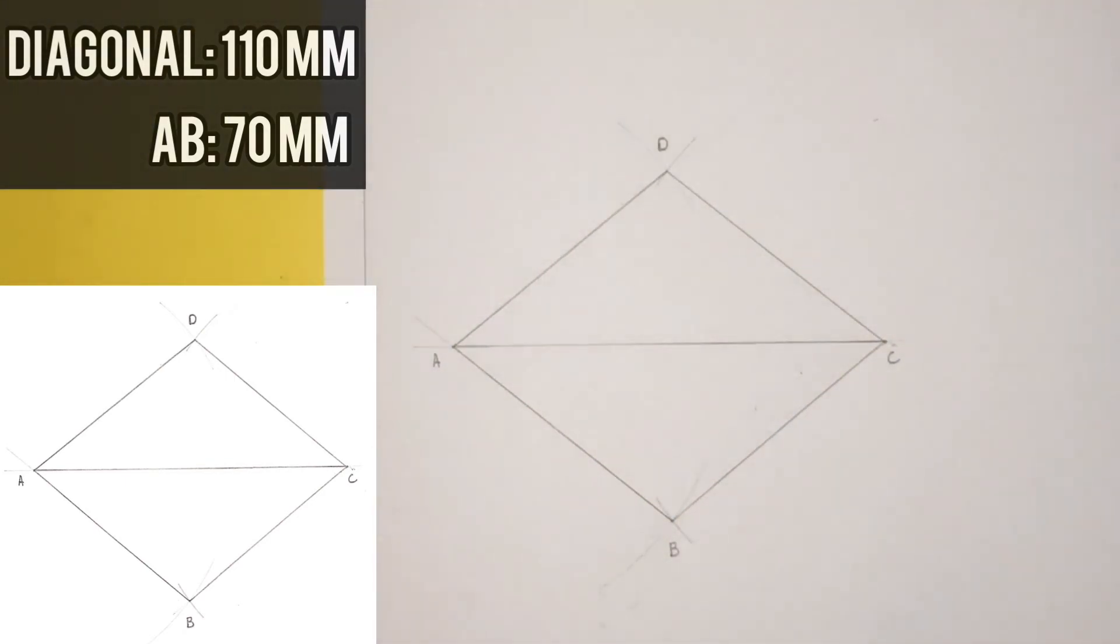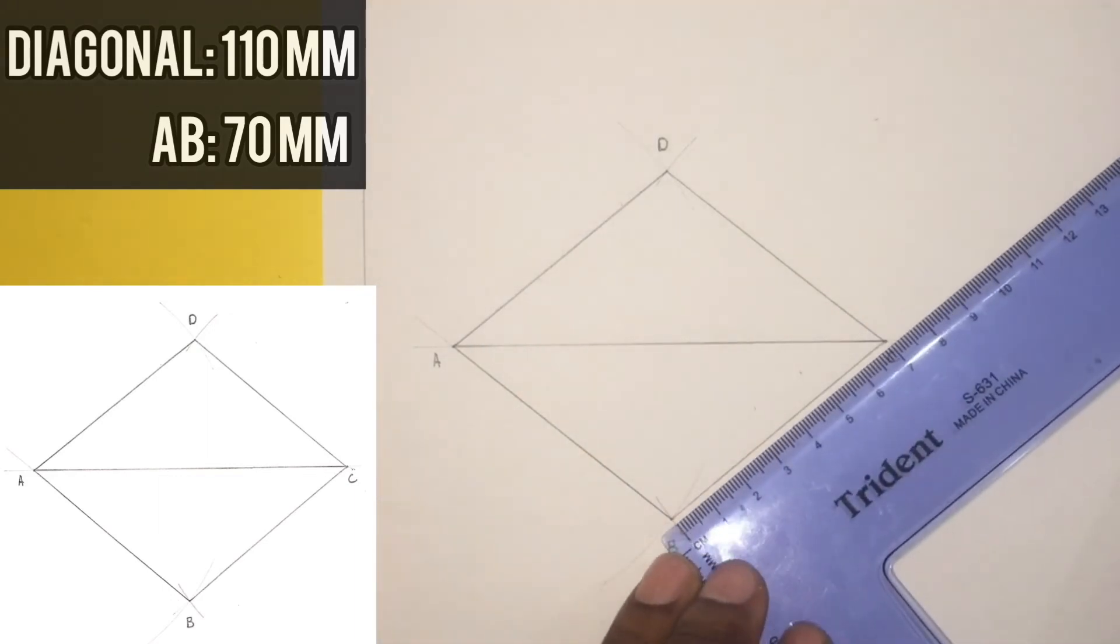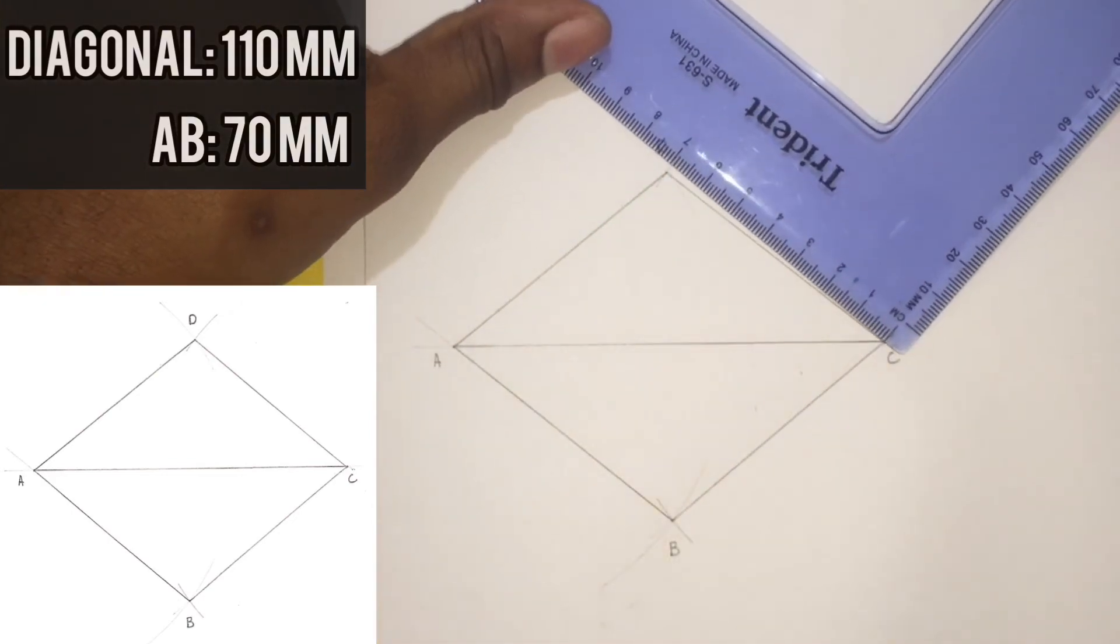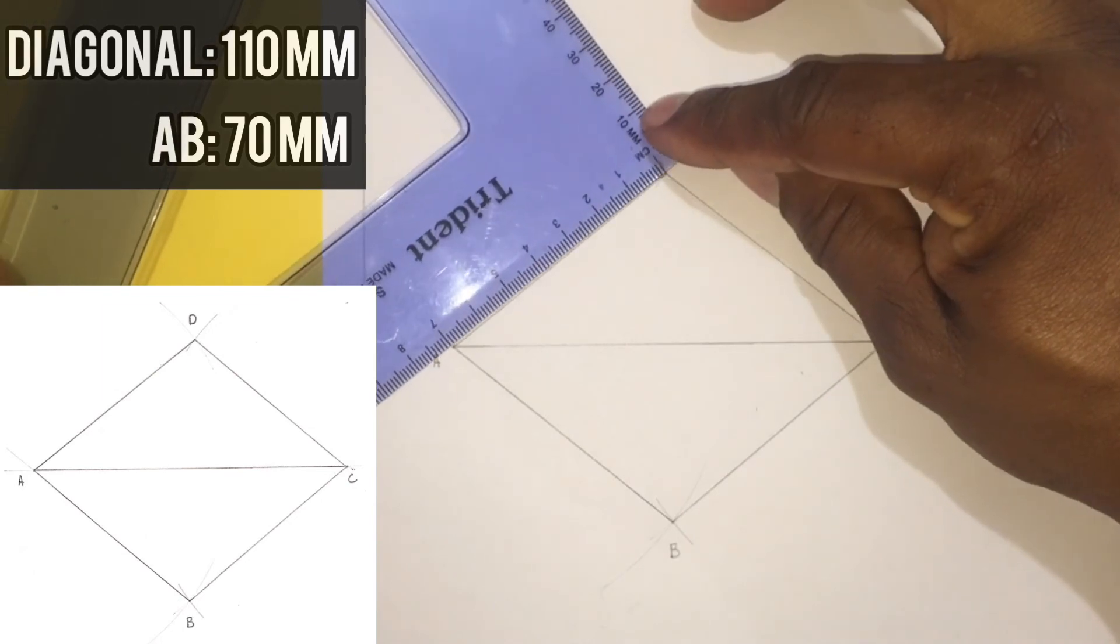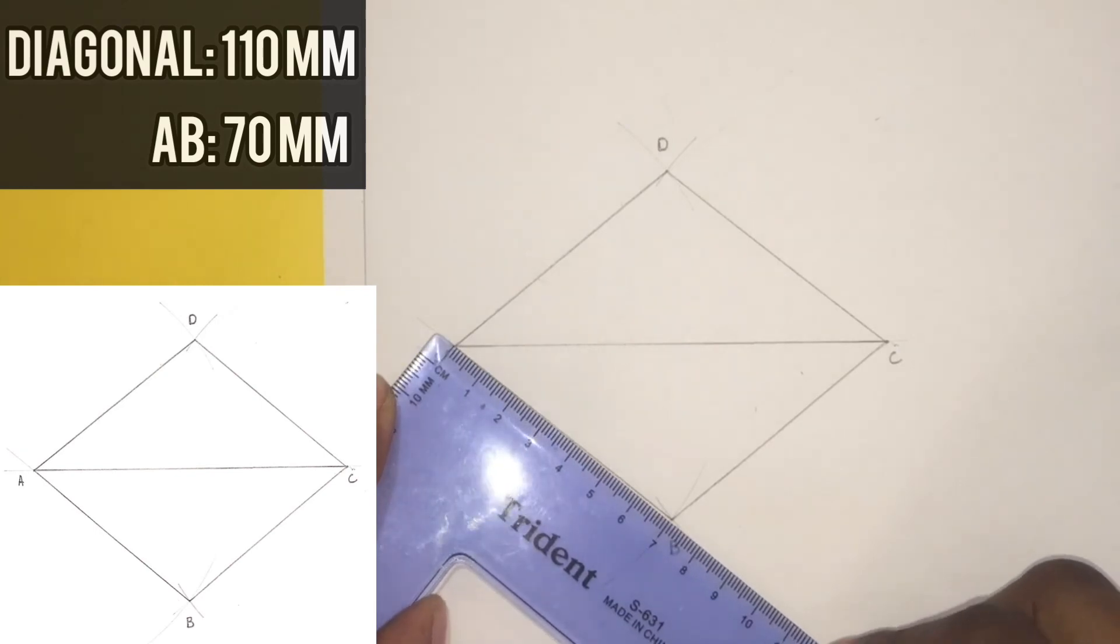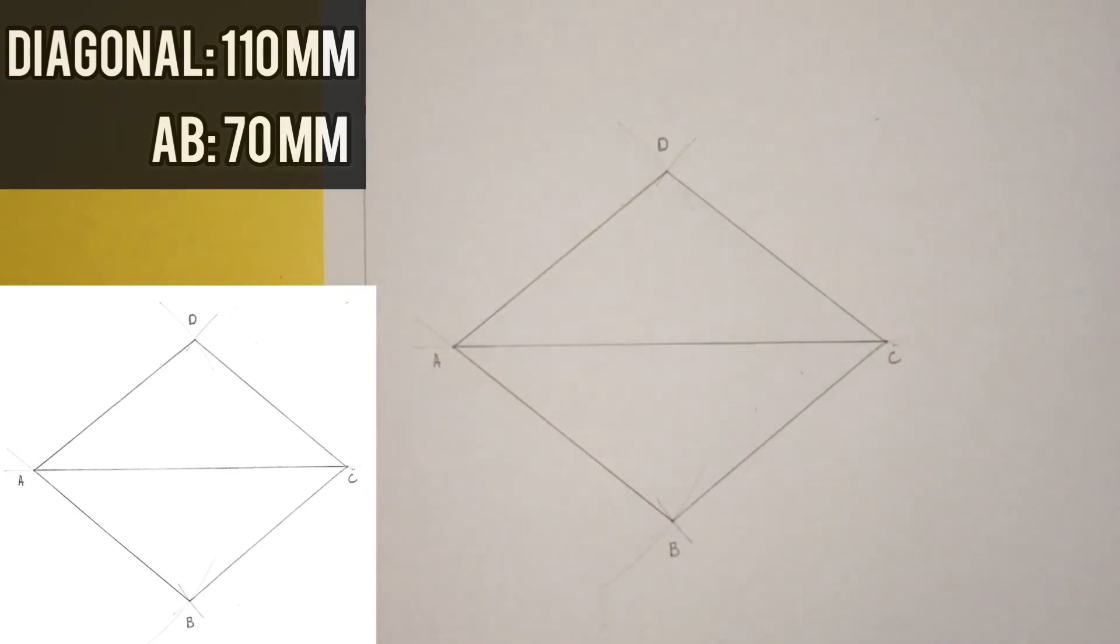I will now measure the length of the sides of the rhombus. All the sides of the rhombus measured 70 millimeters.